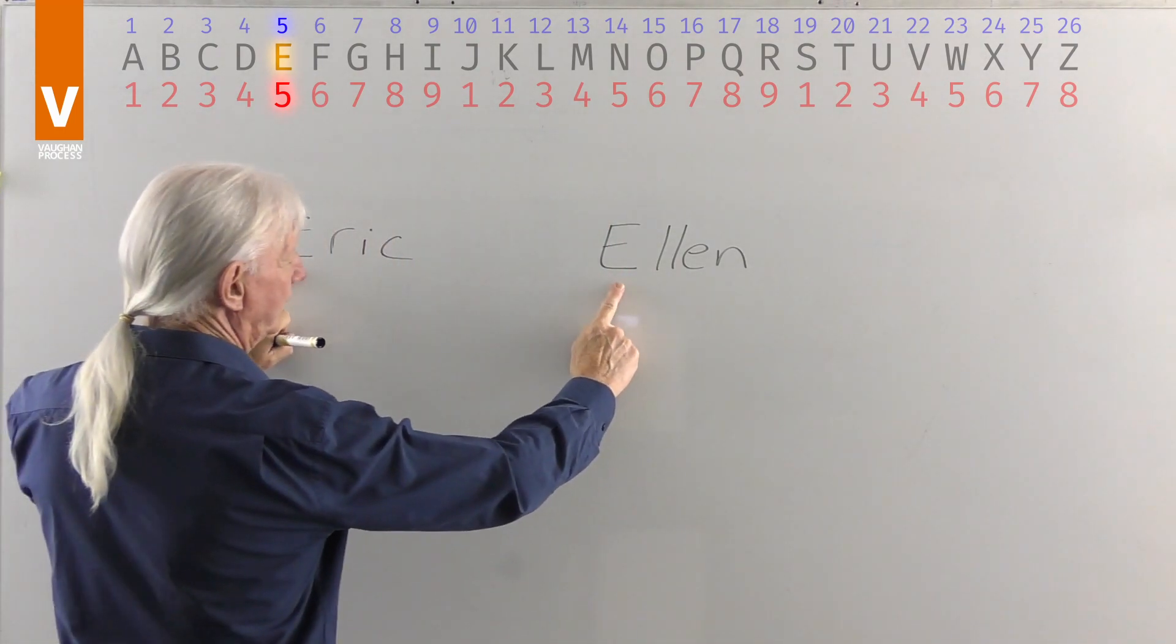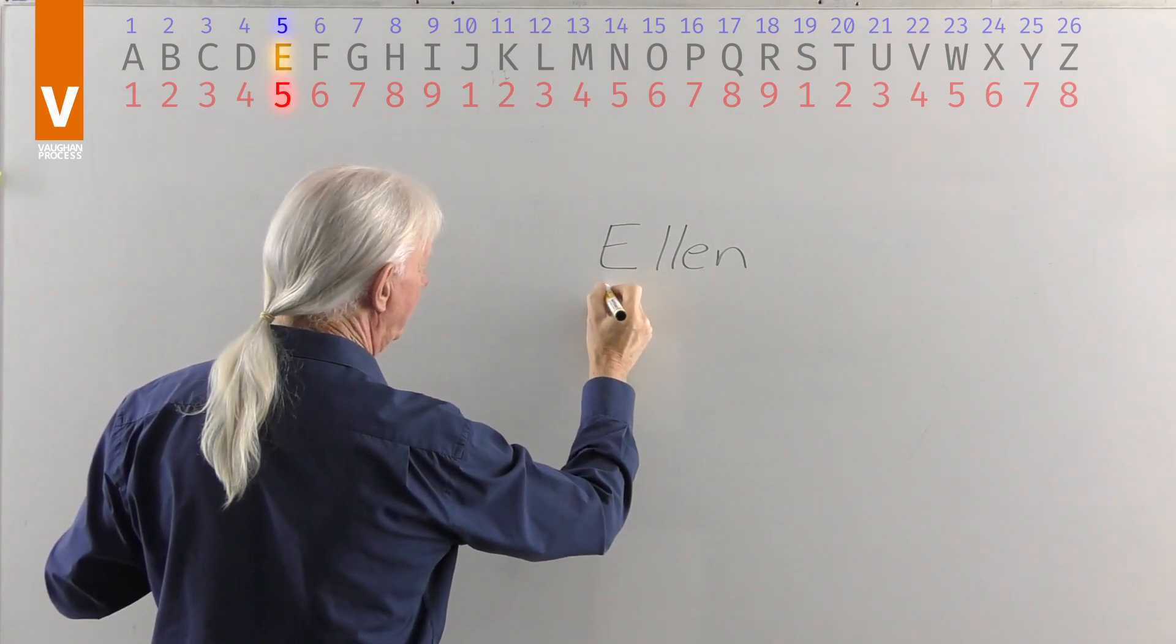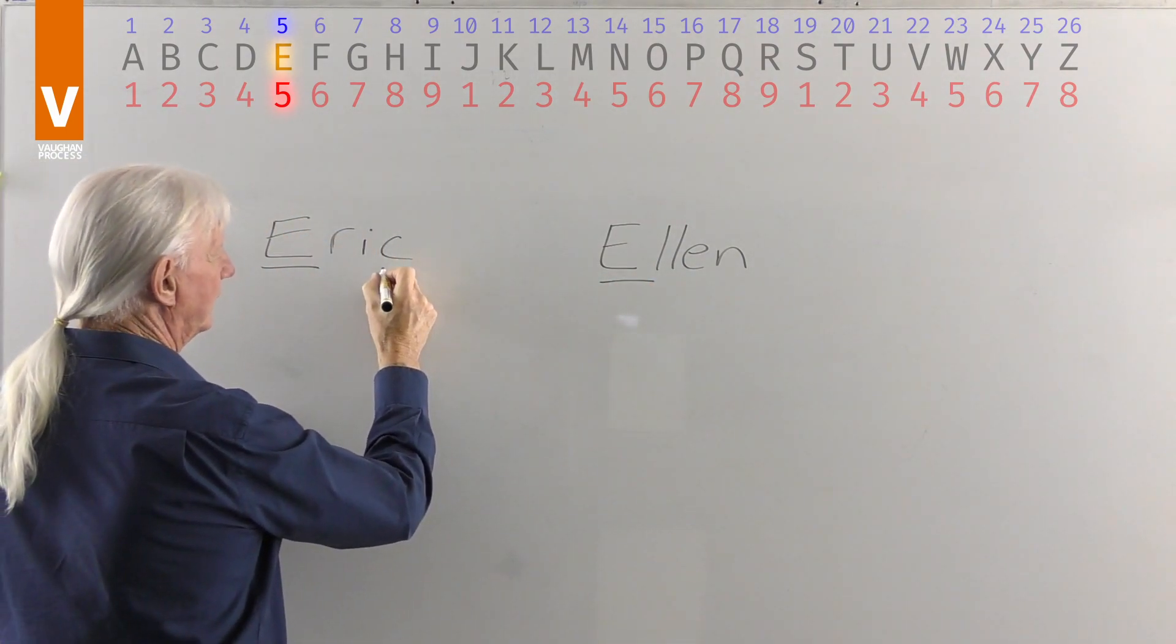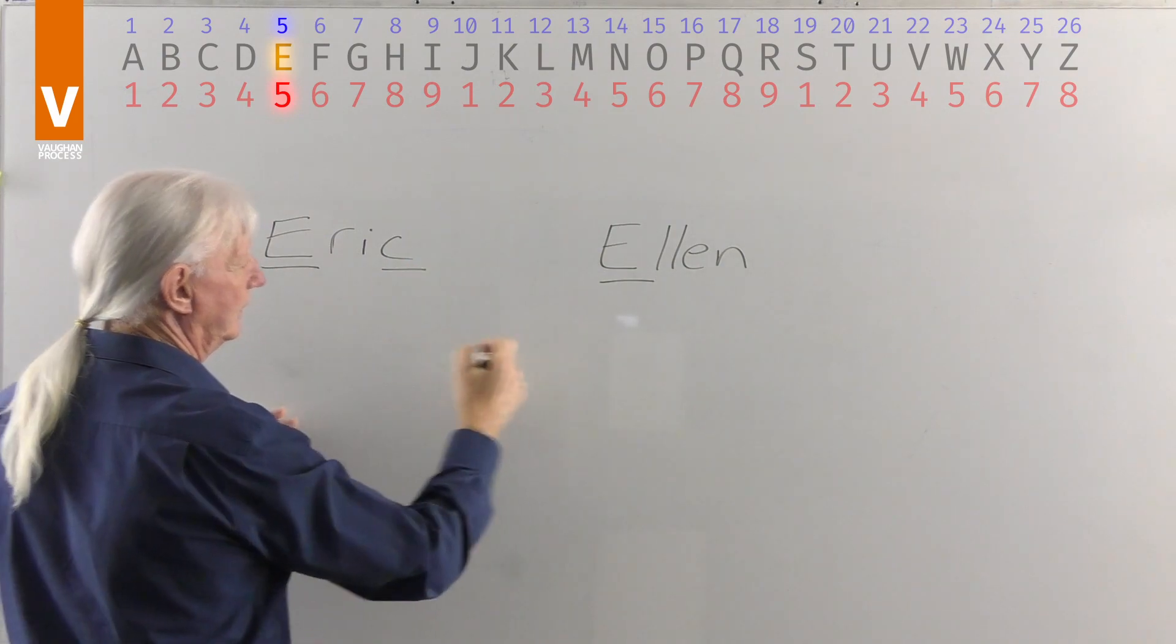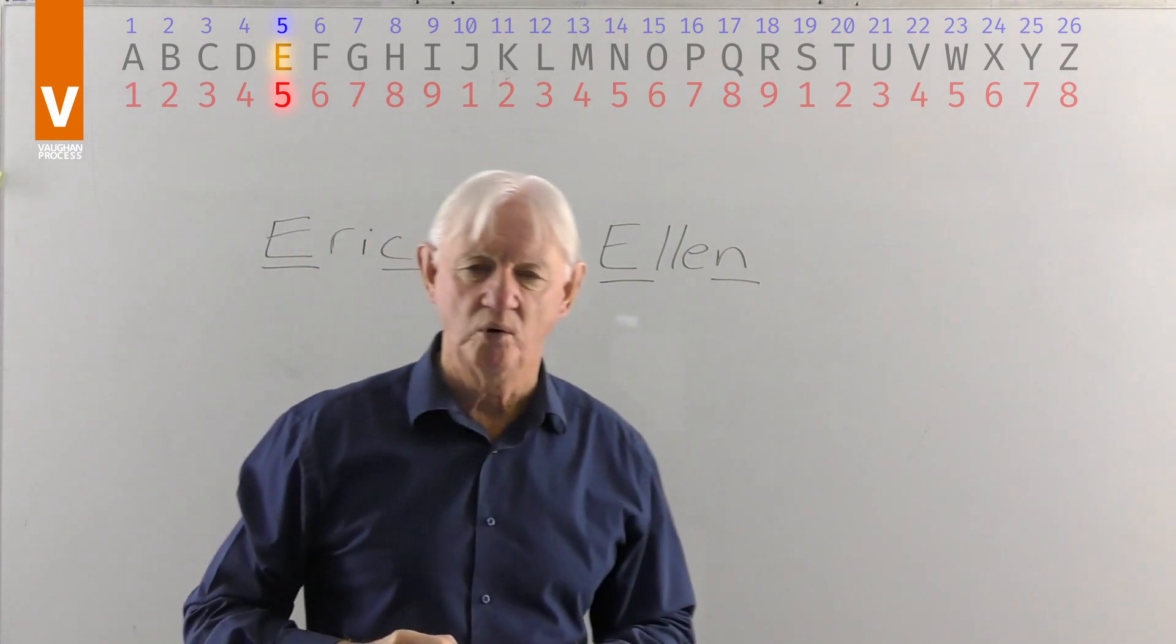So with Eric and Ellen, at the beginning of a name specifically, not so much the middle letters, but in here, the E and the E. And in this case with Eric, we've got the C at the end and an N at the end. So the beginning and end of a name are so important.